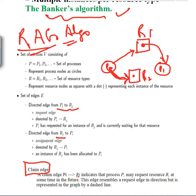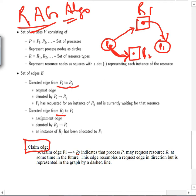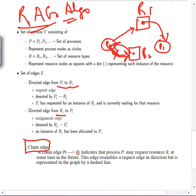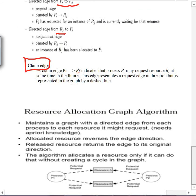The resource allocation graph works as a cycle detection algorithm, because a cycle may lead to deadlock. When a process actually requests a resource, the claim edge converts to a solid request edge. If the resource is then assigned, we get an assignment edge from resource to process. When the process releases the resource, it reverts back to the claim edge. So we move between claim, request, and assignment edges.